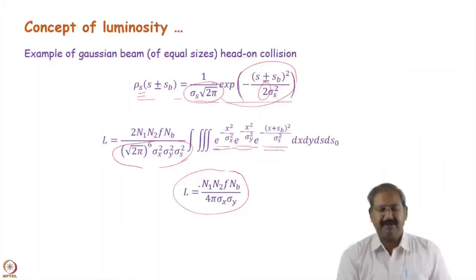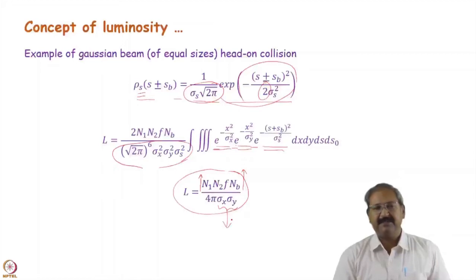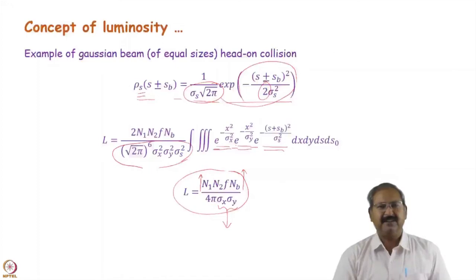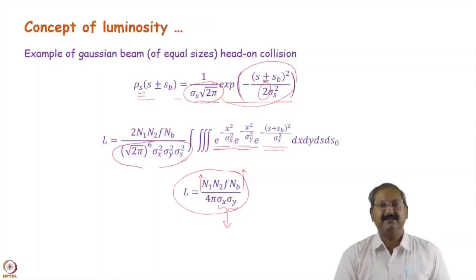For Gaussian bunches, luminosity can be increased by increasing the number of particles per bunch, increasing the number of bunches, and reducing the beam size at the collision point. A very small, densely packed bunch gives more collision events — this is common sense: if a large number of particles are packed into a tiny bunch, collision events will increase when the bunches collide.